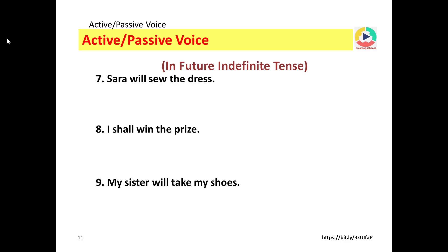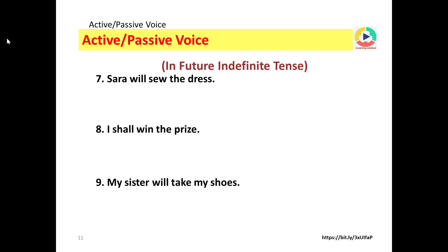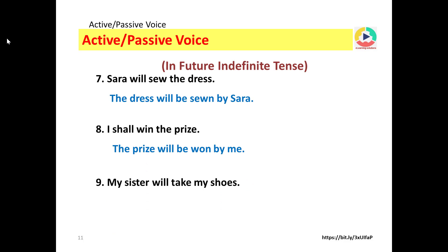In future indefinite tense: Sarah will sew the dress — passive voice: the dress will be sewn by Sarah. Here the helping verb is will be. I shall win the prize — passive voice: the prize will be won by me. My sister will take my shoes — passive voice: my shoes will be taken by my sister.